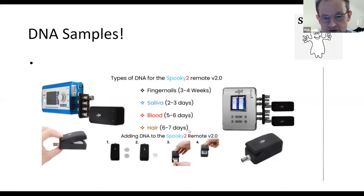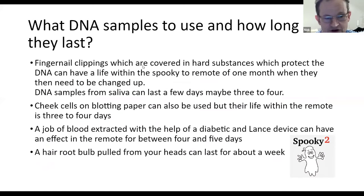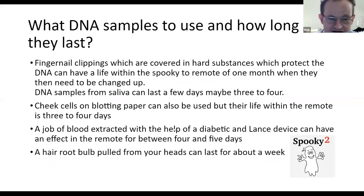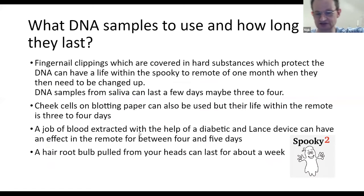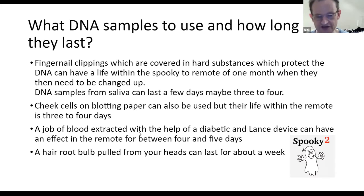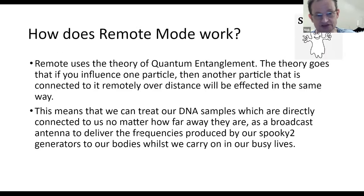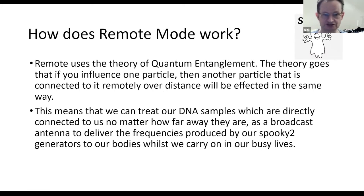We use sticky paper labels or masking tape to wrap our DNA samples, then place them into the clam-shaped remote unit, changing them when required. Fingernail clippings are very common; cheek cells on blotting paper are also quite common. A tiny drop of blood extracted with a diabetic lancet can have a great effect over four to five days. I personally use fingernails and hair bulbs, and have also used a drop of blood as a DNA sample.